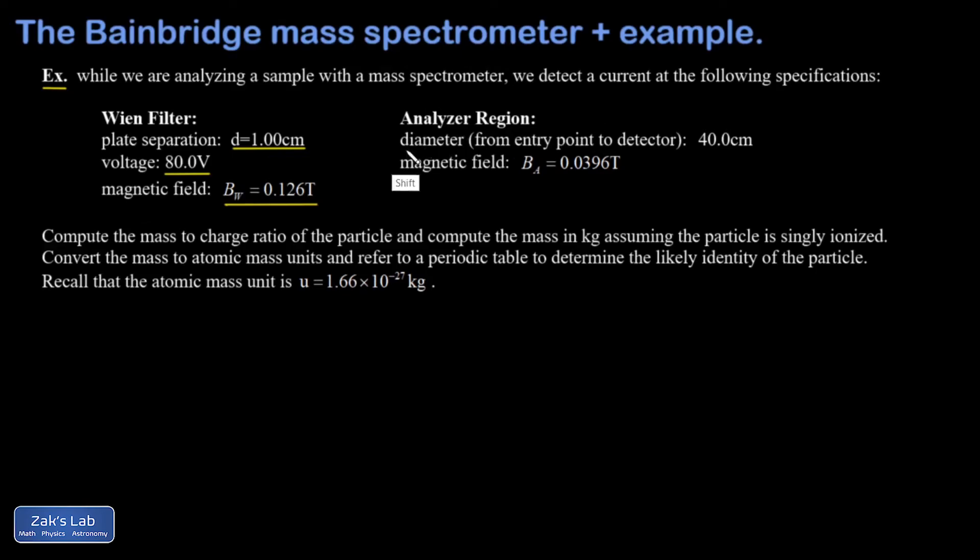In the analyzer region, we have a diameter from the entry point into the analyzer all the way down to the detector. Again, this is a semicircle of 40 centimeters. And that means the radius of curvature is 20 centimeters for any beam that's going to be detected. And we have a magnetic field in the analyzer region of BA is 0.0396 Tesla.